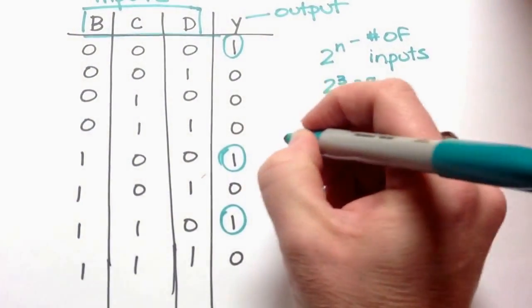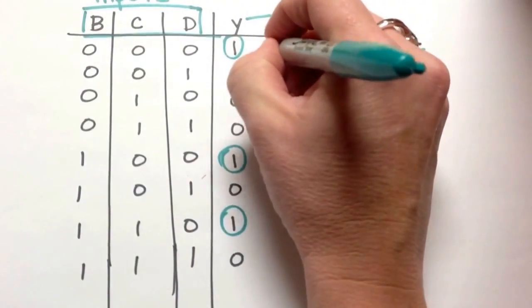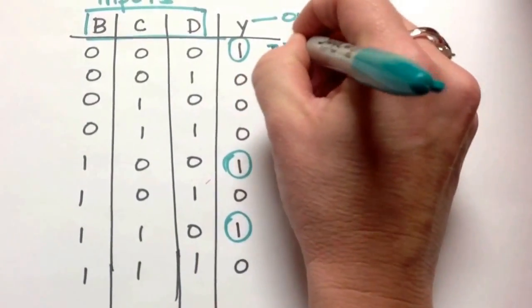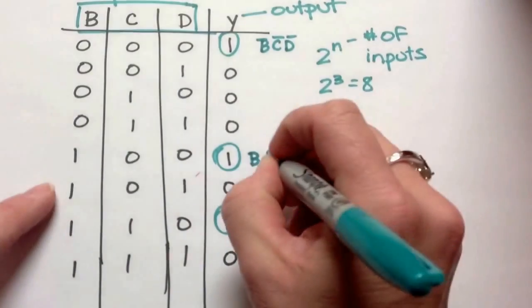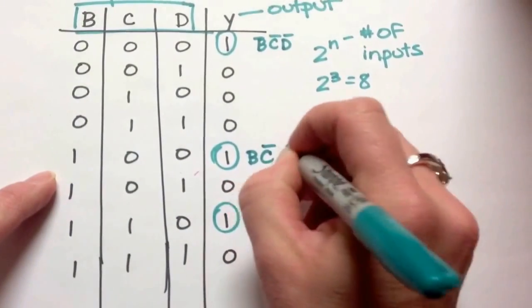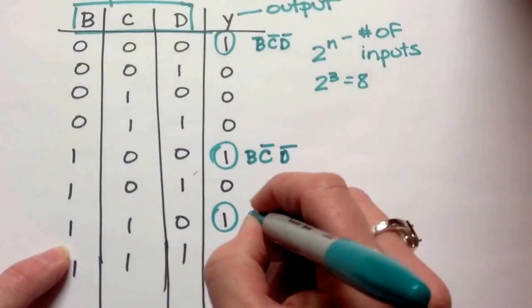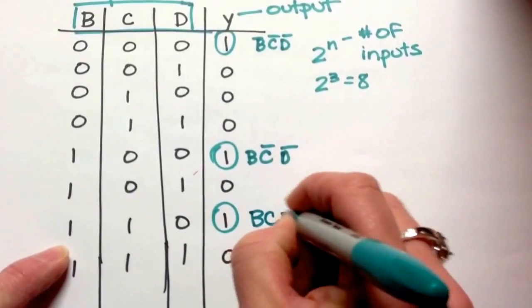So our logic expression, the term for this one would be not B, not C, not D. Here it would be B, not C, not D.